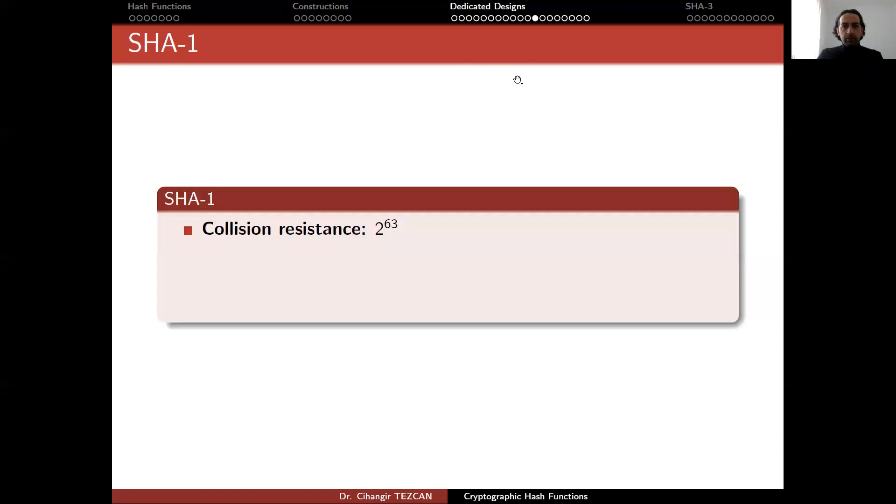Security of SHA-1 is an important issue. If you think about collision resistance, since the message digest length is 160 bits, the birthday paradox means that to find a collision, you need to perform around 2 to the 80 SHA-1 operations to get a collision.